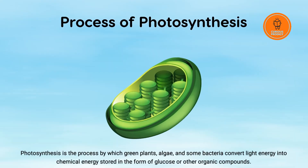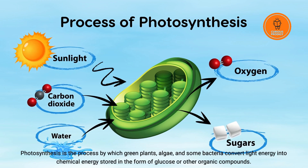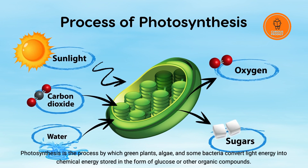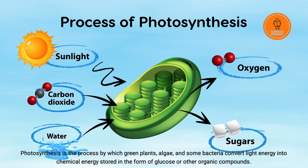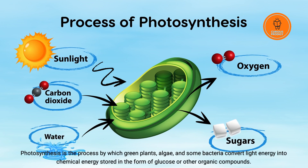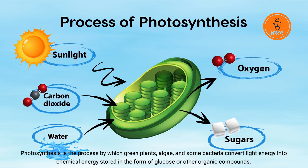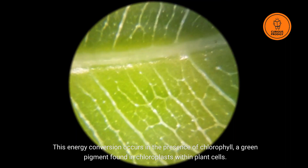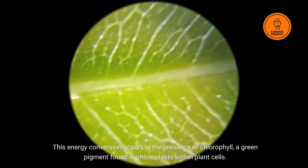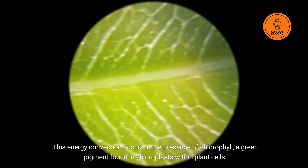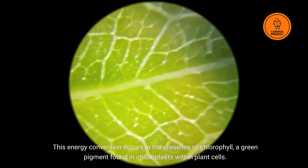Photosynthesis is the process by which green plants, algae, and some bacteria convert light energy into chemical energy stored in the form of glucose or other organic compounds. This energy conversion occurs in the presence of chlorophyll, a green pigment found in chloroplasts within plant cells.